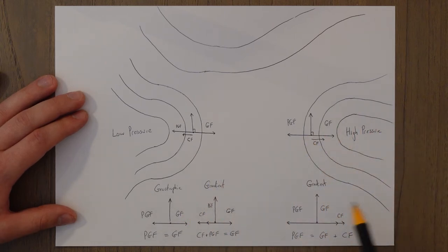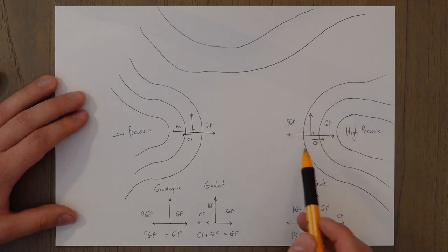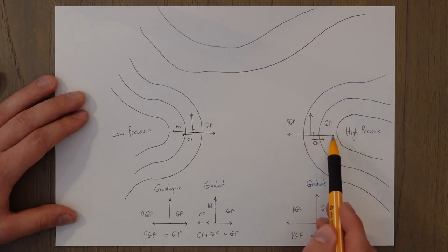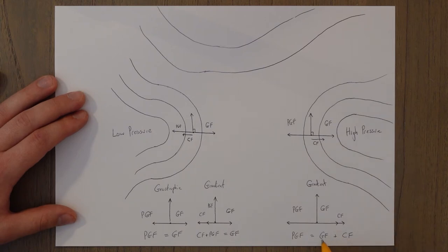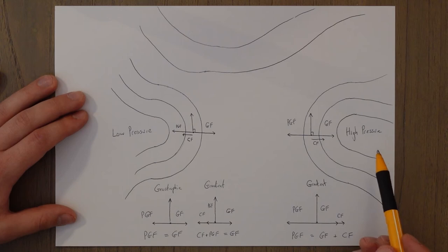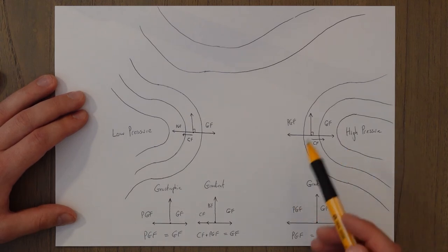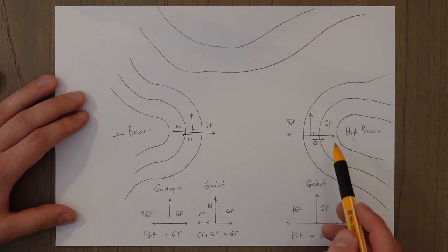For a high pressure system the pressure gradient force acts from high to low, we're pulled around to the right in the northern hemisphere, and the geostrophic force is equal and opposite. But now the centripetal force plus the geostrophic force equal the pressure gradient force, meaning the PGF must be larger to balance both. This means the gradient wind around a high pressure system is stronger than the equivalent geostrophic wind when isobar spacing is equal.